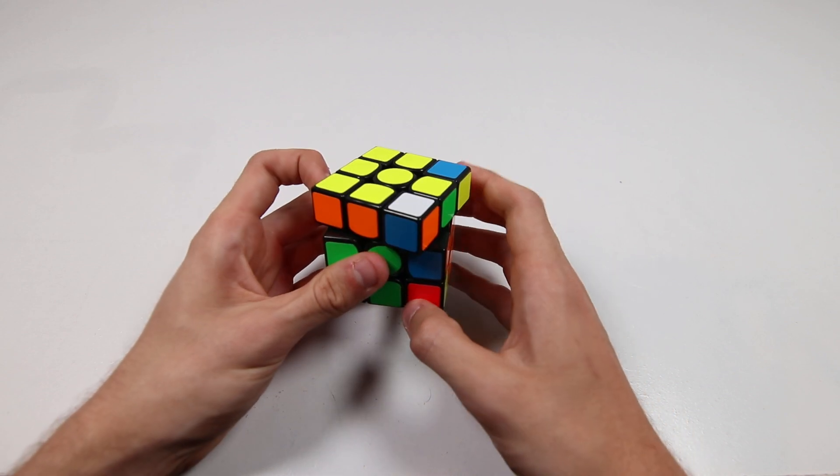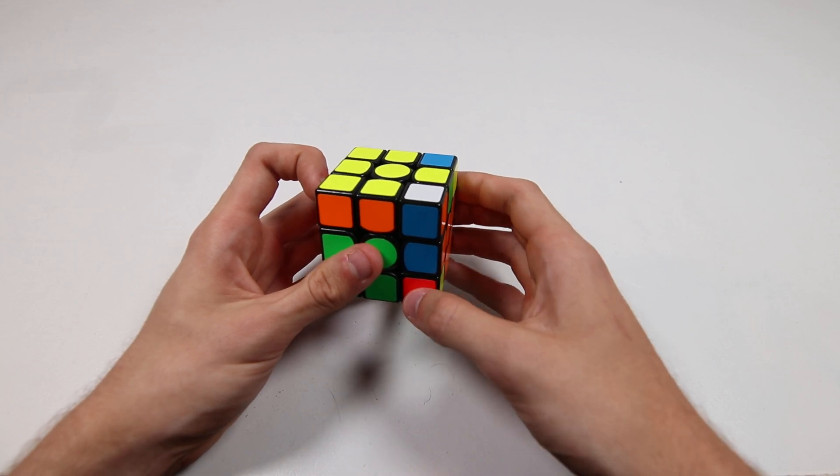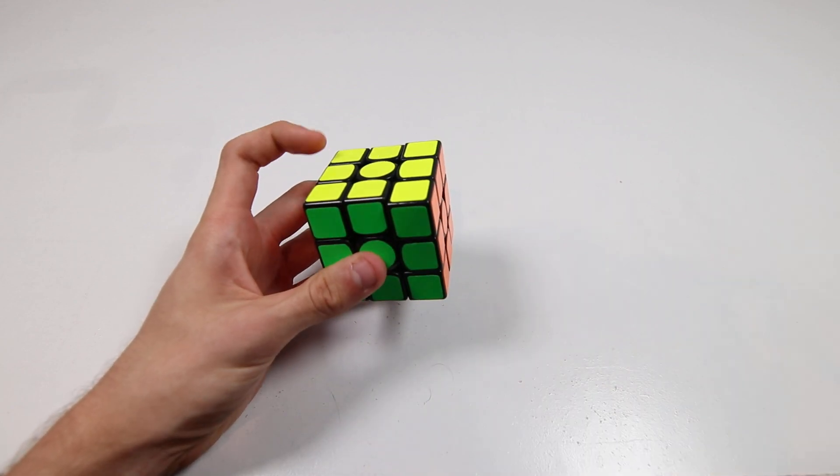So what I've been liking is just doing that. So it's really quick, just like thumb U prime, and then your right hand's in the right position and then you can just finish like that.